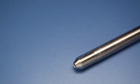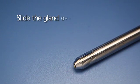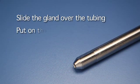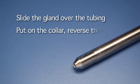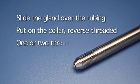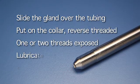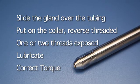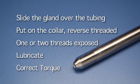To ensure a leak-free connection, slide the gland over the tubing, put on the collar which is reverse threaded, leave one or two threads exposed, lubricate the contact points, and tighten the gland to the correct torque value.